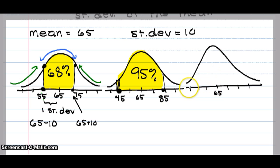If we went three standard deviations below the mean and three standard deviations above the mean, that area is 99.7%. That area is 99.7% of the area under the curve, according to the empirical rule.